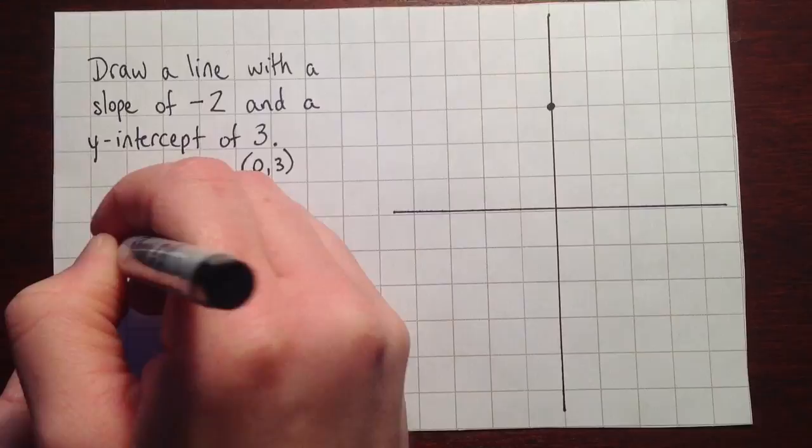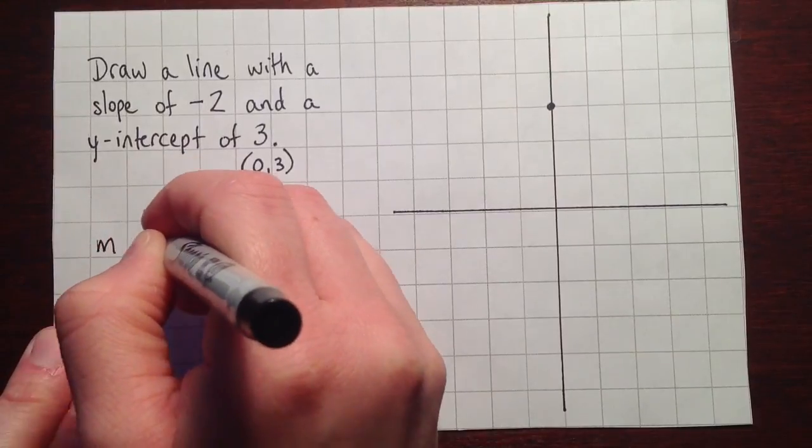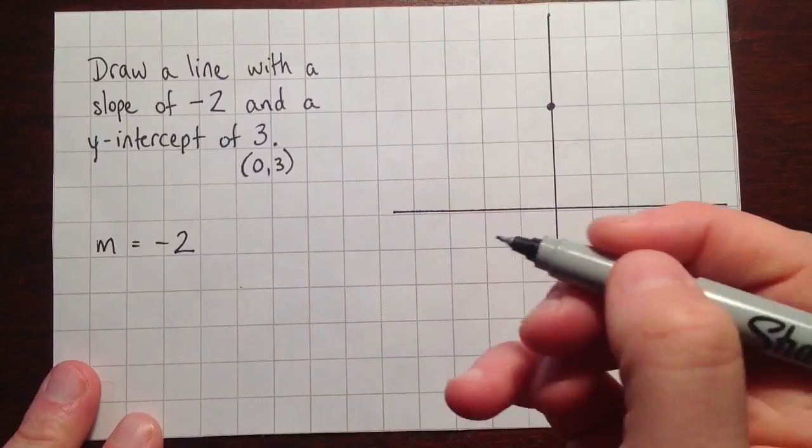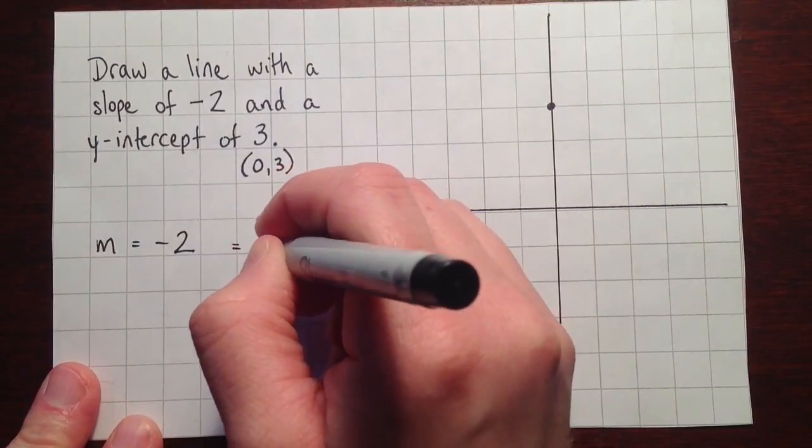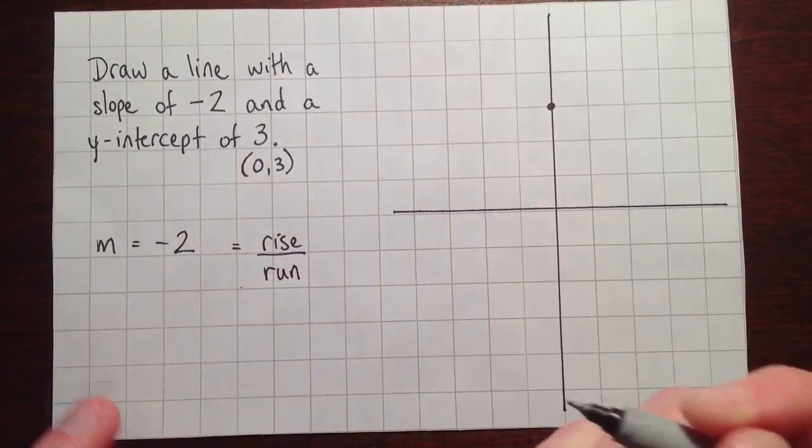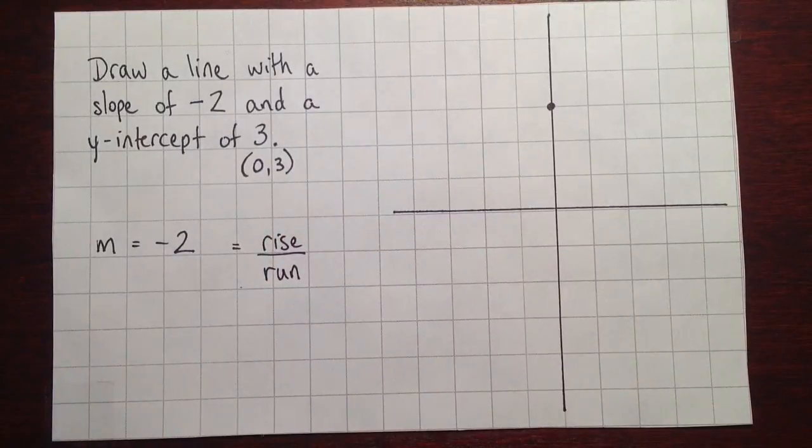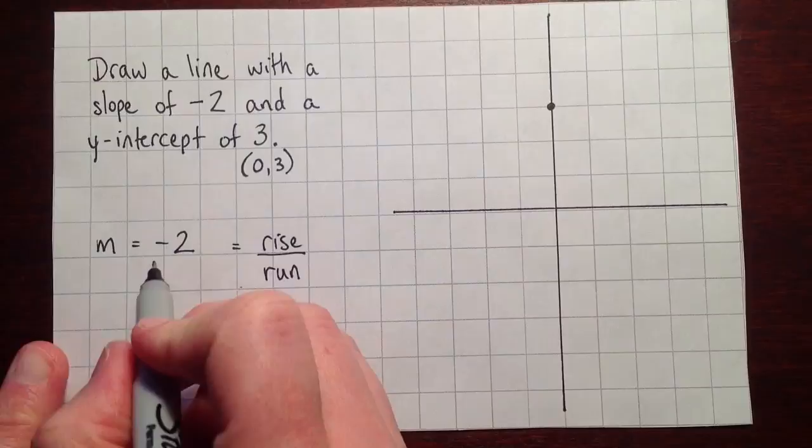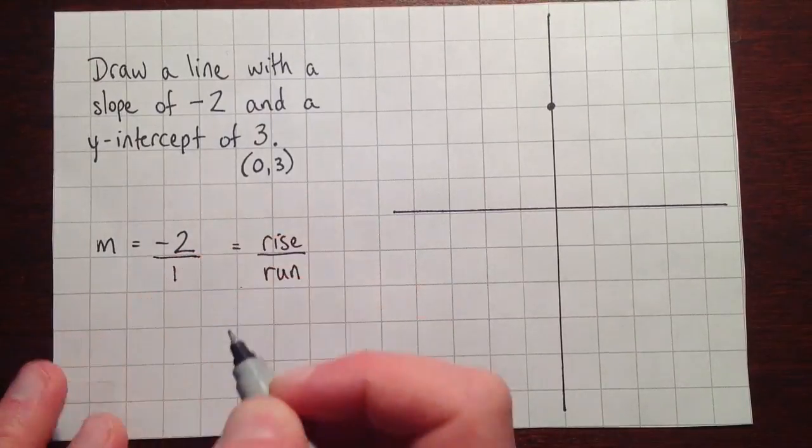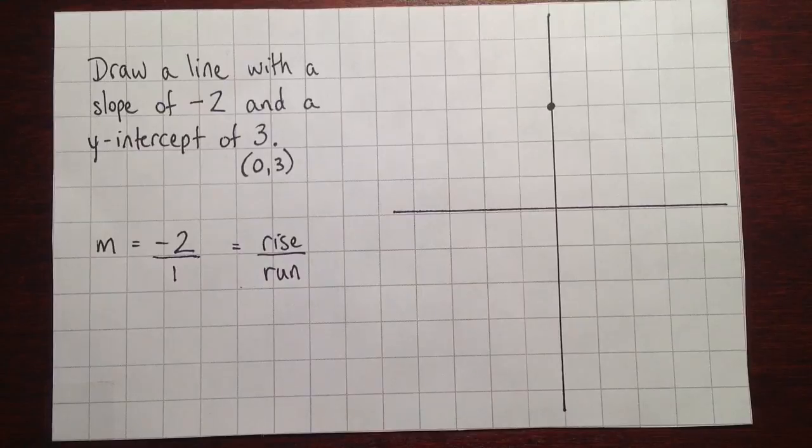Now we've got a slope of negative 2. And remember our slope is rise over run. So if your slope isn't a fraction, the first thing you can always do is just make it into one by calling it, instead of negative 2, it'll be negative 2 over 1.